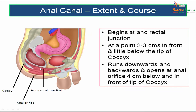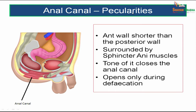The anal canal begins at the anorectal junction, situated 2 to 3 centimeters in front and a little below the tip of the coccyx. It runs downwards and backwards to open at the anal orifice, which is situated 4 centimeters below and in front of the tip of the coccyx. Regarding the peculiarities: the anterior wall is shorter than the posterior wall. An important peculiarity is that it is surrounded by sphincter ani muscles — internal and external sphincters — the tone of which closes the anal canal, opening only during defecation.